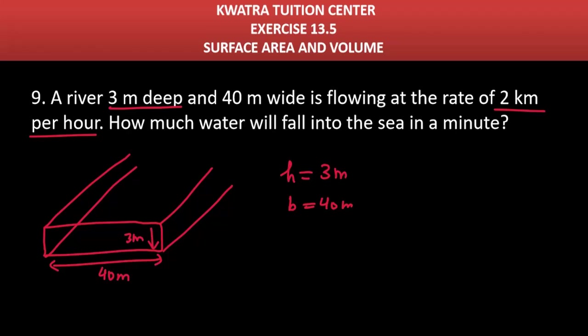They said that it flows at 2 km per hour. So if you look at it, how much water can flow in water? That water is flowing in river in one hour. That means how much water can flow in one hour. So it is about 2 km. If you convert it in meters, then what will happen? 2,000 meters.